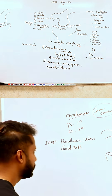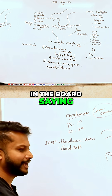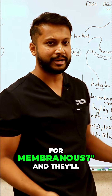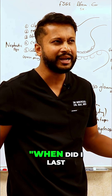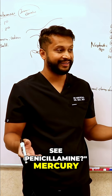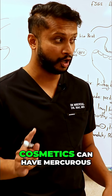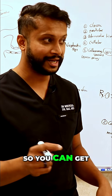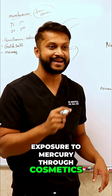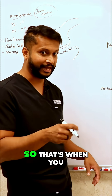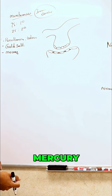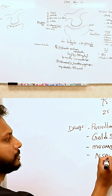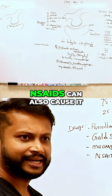On boards, they'll say a patient with rheumatoid arthritis has nephrotic syndrome and ask about the association with membranous — they'll give you penicillamine. Mercury is another cause; women's cosmetics can contain mercurous substances, so you can get mercury exposure through cosmetics. NSAIDs can also cause membranous nephropathy.